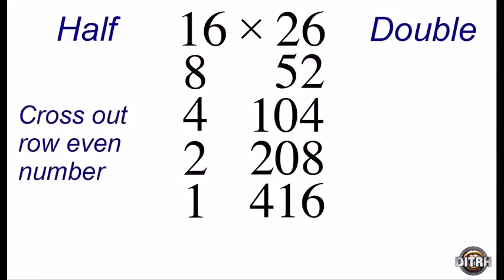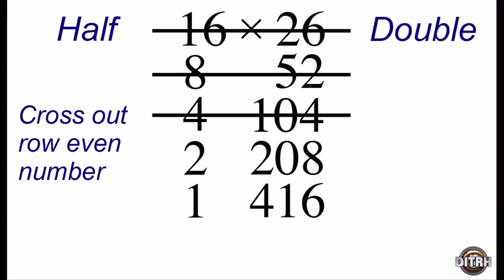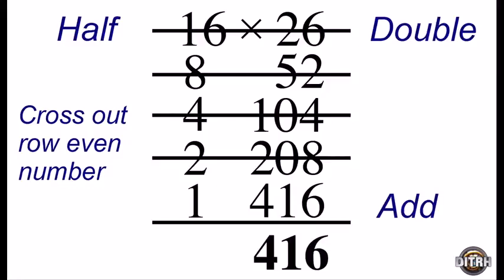The third step is to cross out any row in our table that starts with an even number. And in this table, we have a lot of even numbers. So we cross out the first row, the second row, the third, and the fourth row. The only row that remains is the last row, and so that's our answer, 416. And in fact, 16 times 26 is 416.